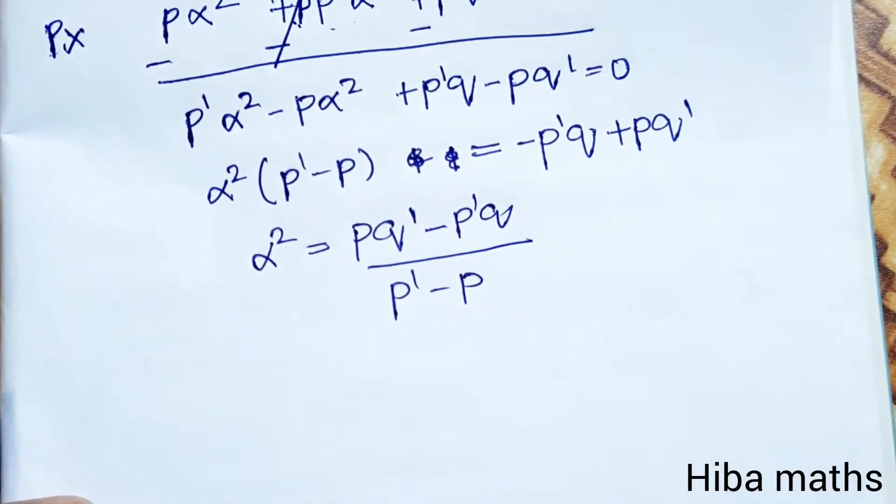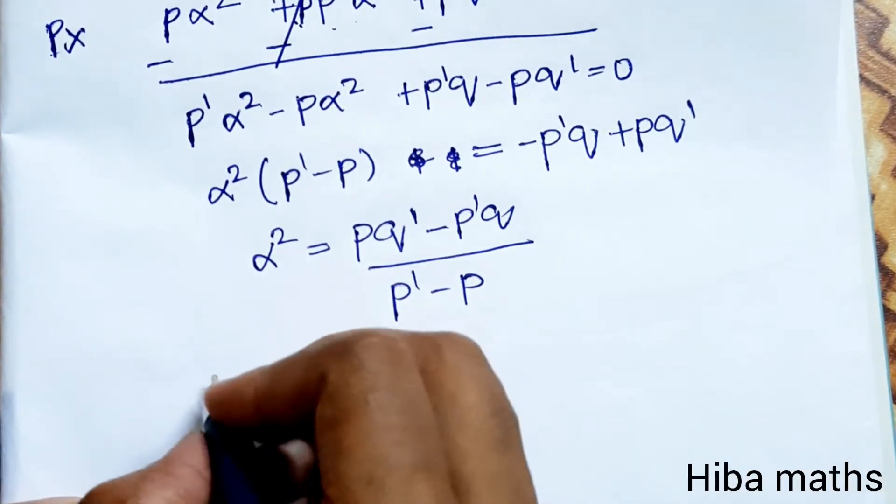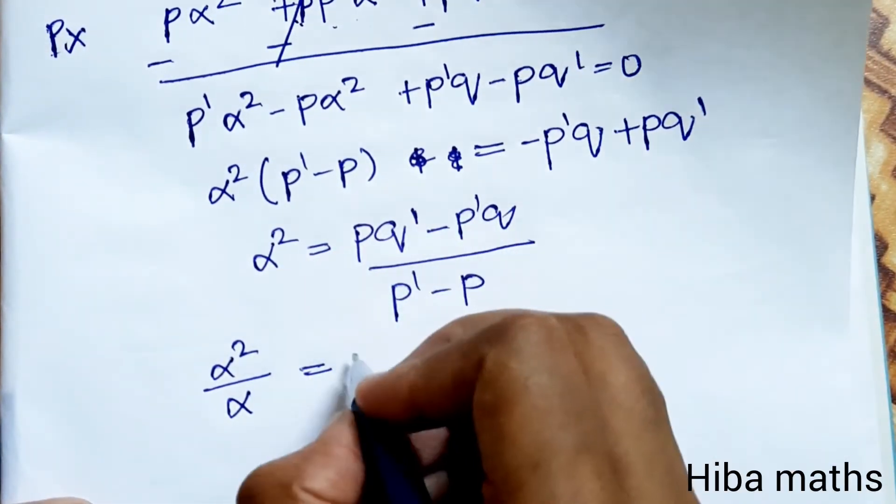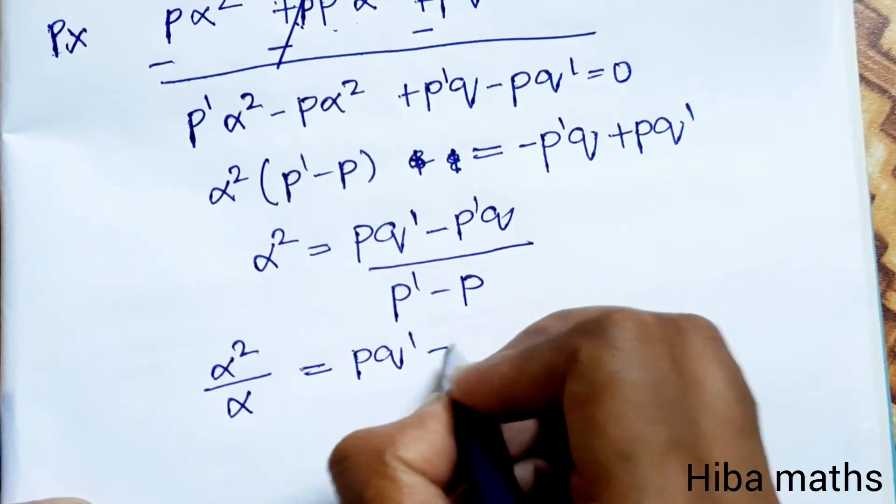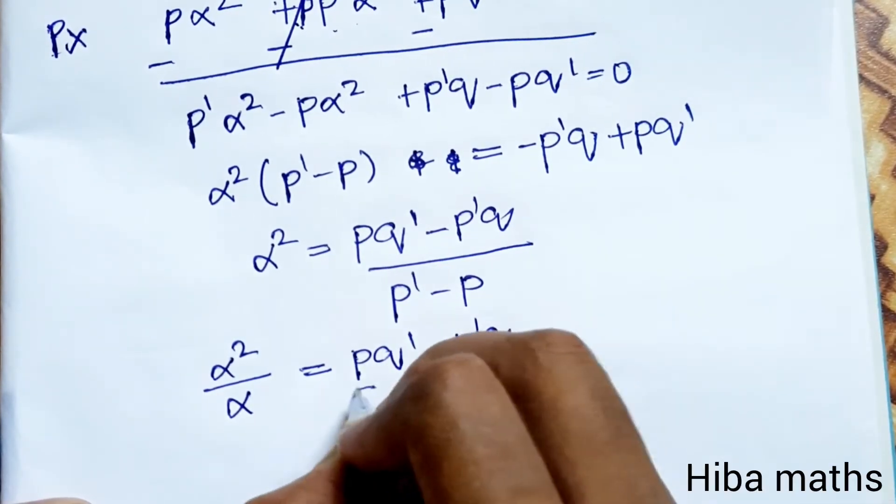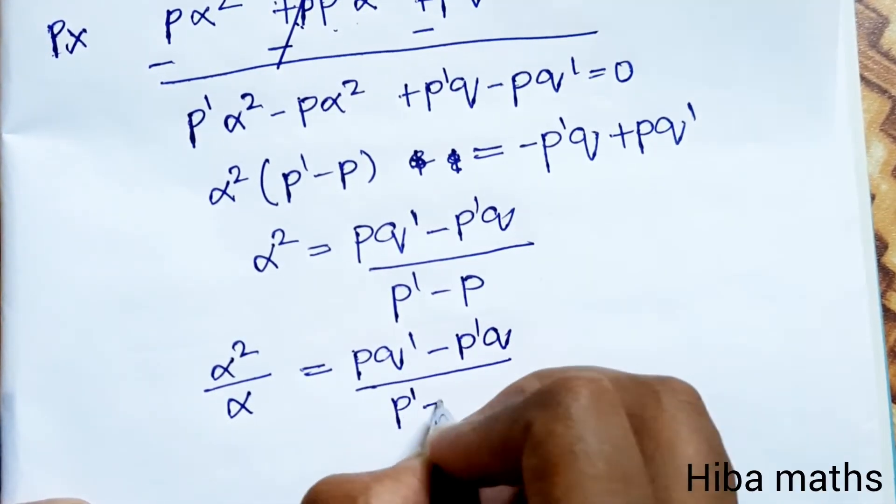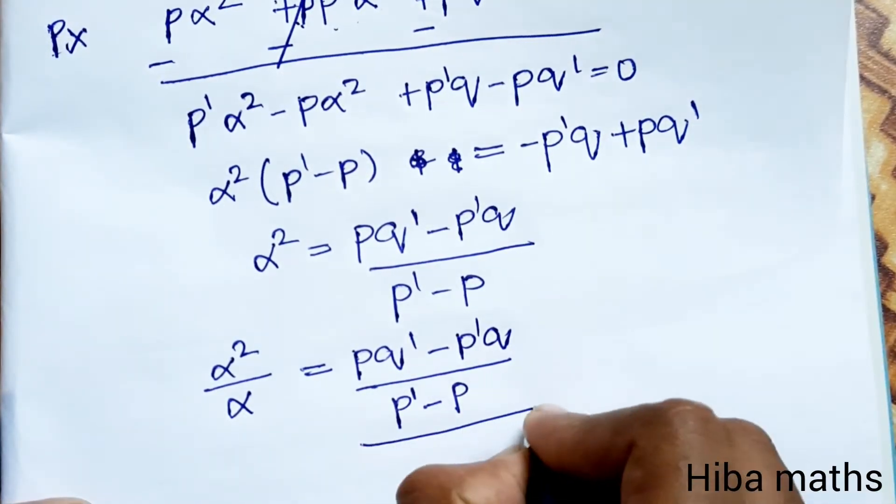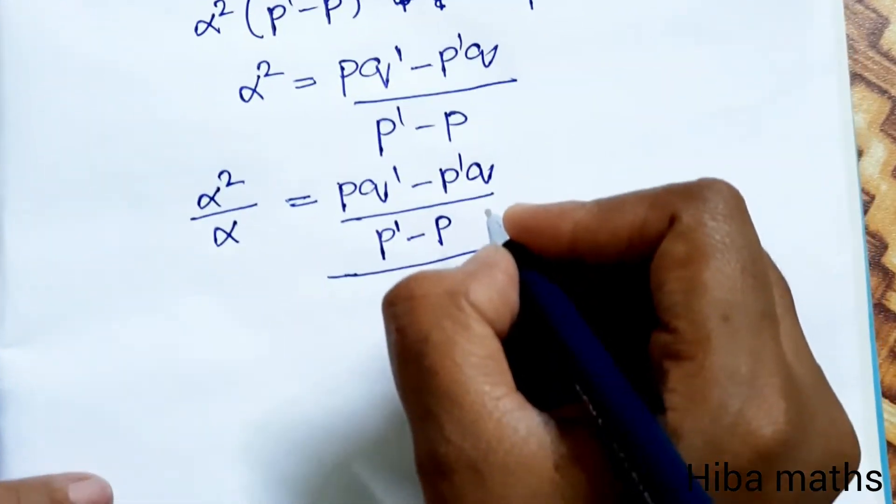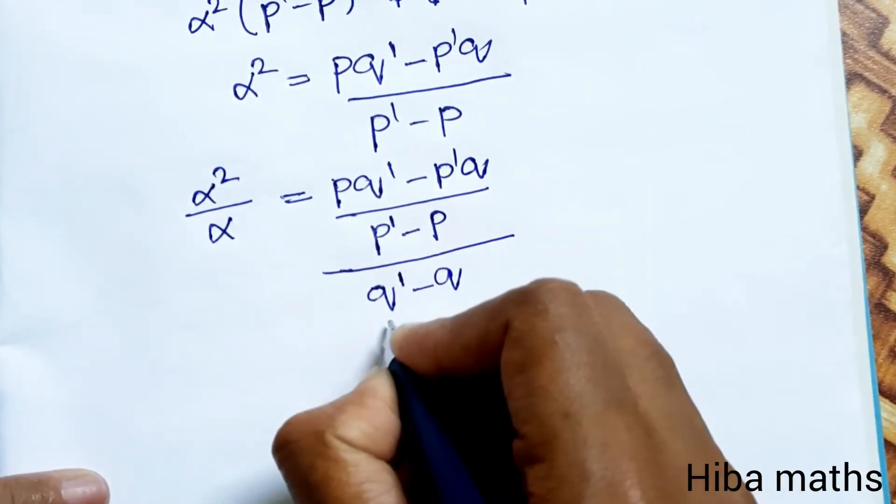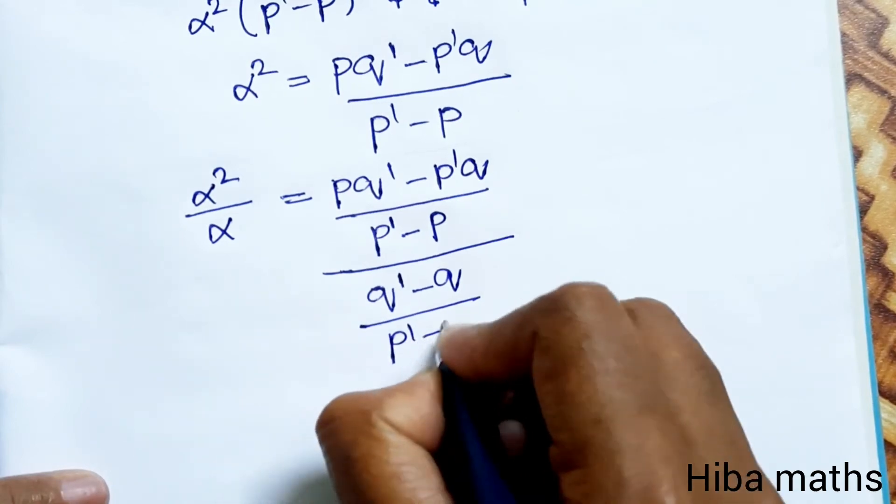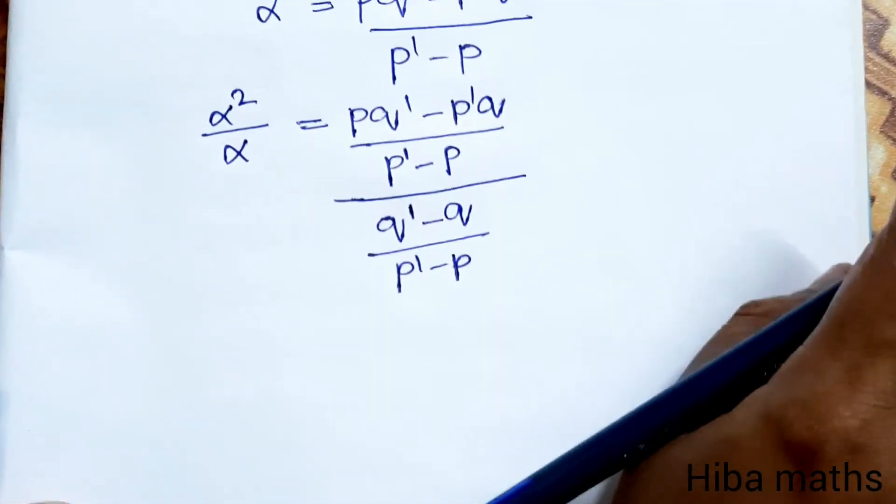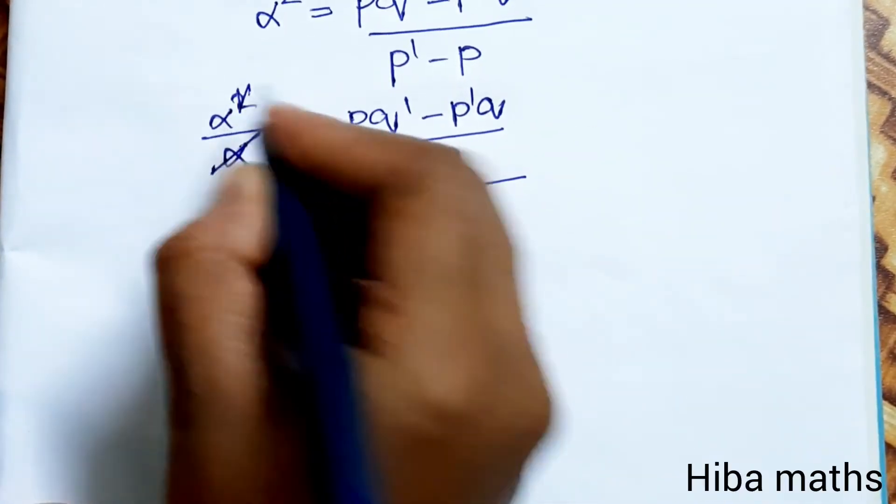α² divided by α gives α, so α = (pq' - p'q)/(p' - p). Next, taking the reciprocal: α = (q' - q)/(p' - p). This reciprocal form gives us one form, and canceling α we get the result.